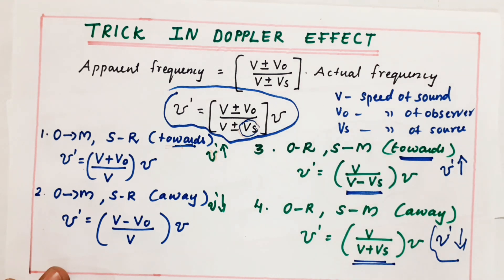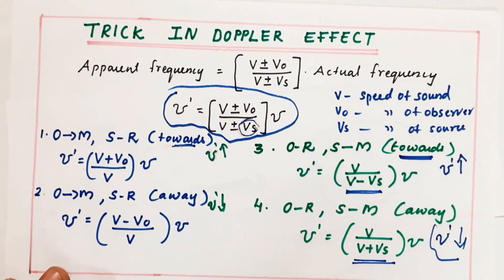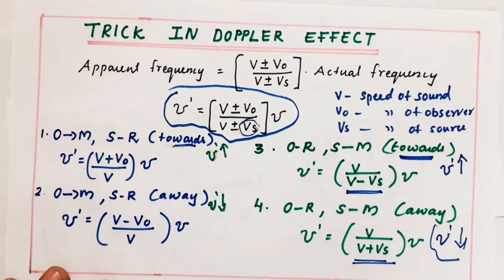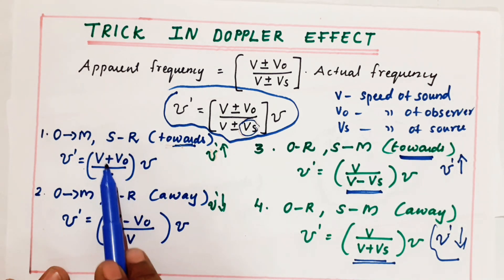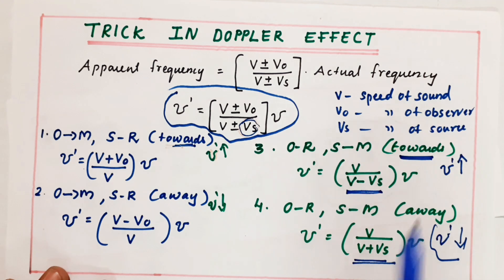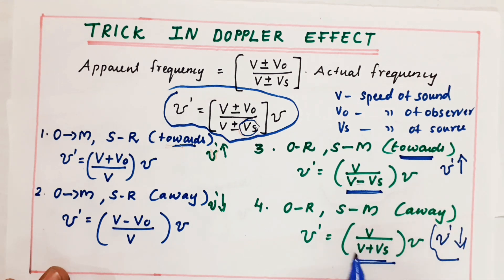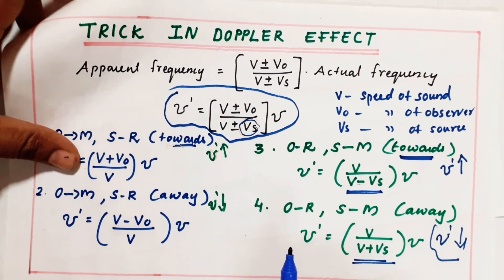So you just remember the standard formula: nu dash equals V plus or minus V_O by V plus or minus V_S, into nu. If we are talking about the observer term — it is in the numerator — moving towards means numerator connects with plus; moving away means numerator connects with minus. If we are talking about the source term — it is in the denominator — moving towards means denominator connects with minus; moving away means denominator connects with plus.